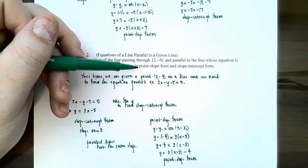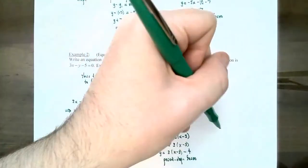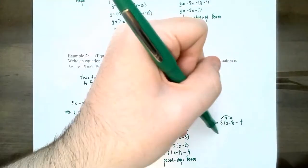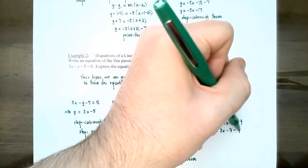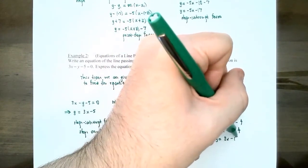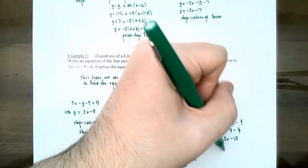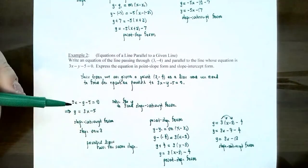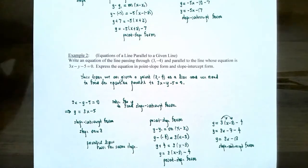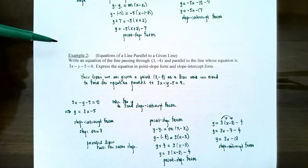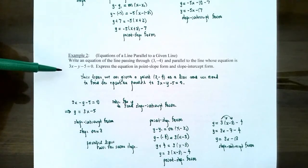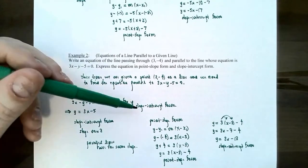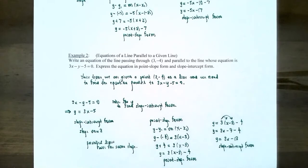Now we also need slope-intercept form. Distributing the three through the parentheses: y equals three x minus nine minus four, which becomes y equals three x minus 13. This is slope-intercept form for the equation of the line passing through three, negative four and parallel to three x minus y minus five equals zero. In Example 1 the given equation was already in slope-intercept form, but here we had to do the extra step of solving for y first.